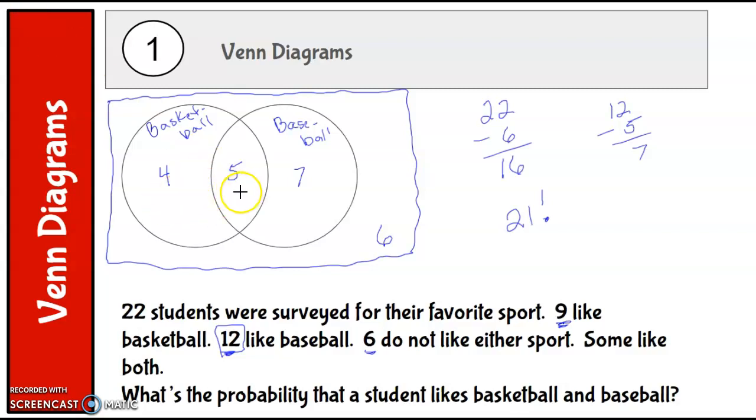Let's check this out. 4 plus 5 is 9, plus 7 is 16. So there's 16 here, plus 6 who don't like anything - that's the 22 that were surveyed. Okay, so we're good there. Do we have 12 that like baseball? Yes. Do we have 9 that like basketball? Yes. Do we have 6 that do not like either sport? Yes.